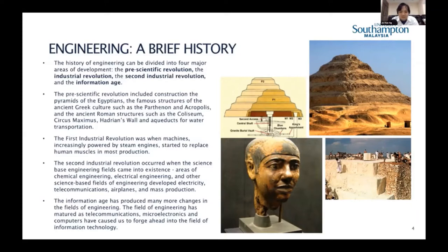Previously, oxen, horses, and humans carried everything — that's how they built the pyramids, purely using muscle. After the first industrial revolution sparked by the steam engine, we moved on to the second industrial revolution. The two main engineering fields initially were civil and mechanical, which then spread to a larger base including chemical engineering.